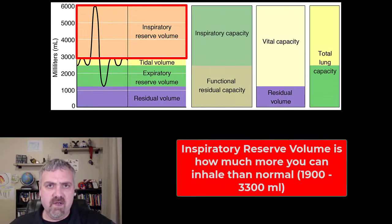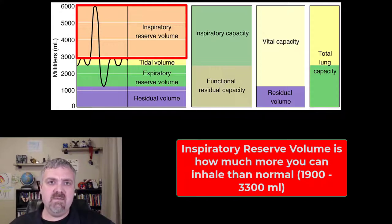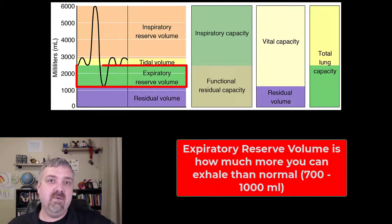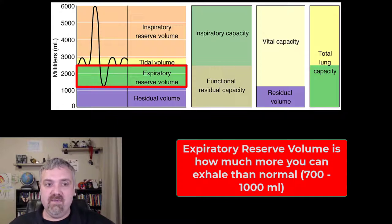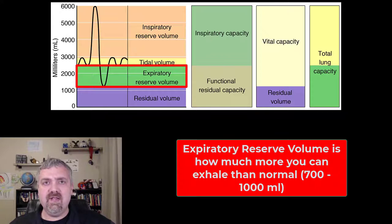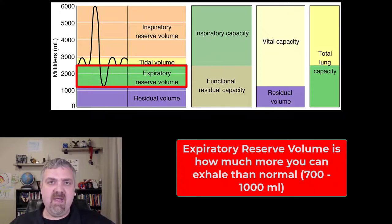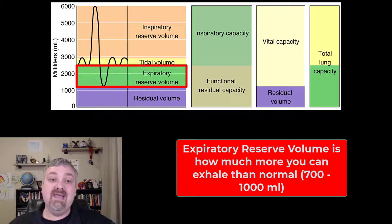Next we have what are called your reserve volumes. The inspiratory reserve volume is how much more you can inspire or inhale than you normally do. Your expiratory reserve volume is how much more you can normally expire or exhale than normal. The inspiratory reserve volume is usually going to be 1,900 to 3,300 milliliters — the lower end numbers would be for a female or someone with a small thoracic cavity, and the larger numbers would generally be the male numbers.